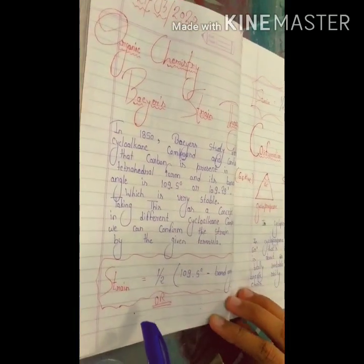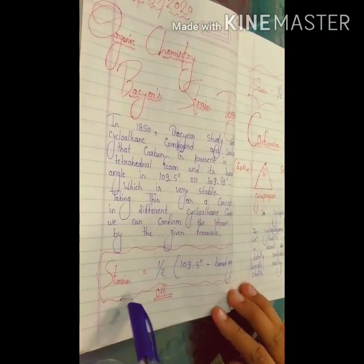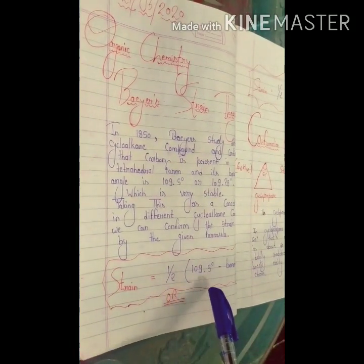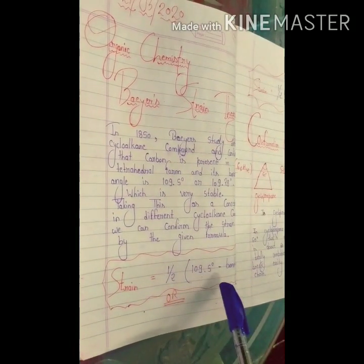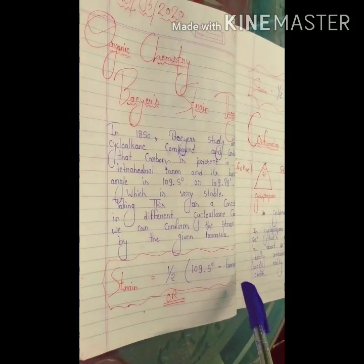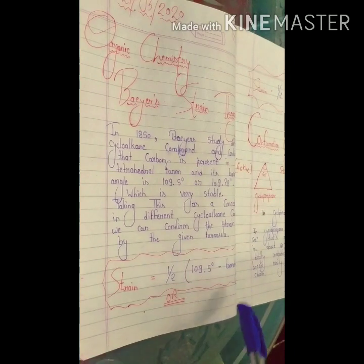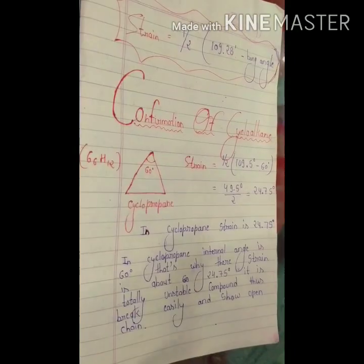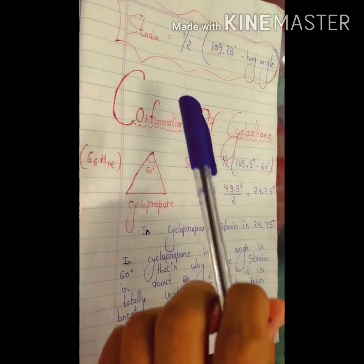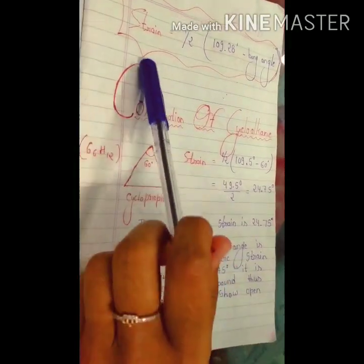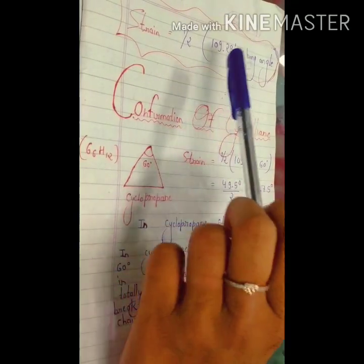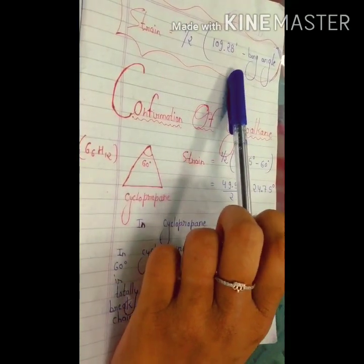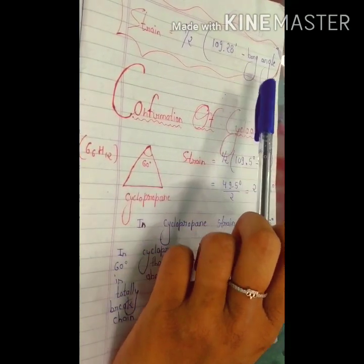Strain is equal to half of (109.5 degrees minus bond angle), or equivalently, strain is equal to half of (109.28 minutes minus bond angle).